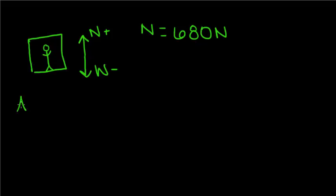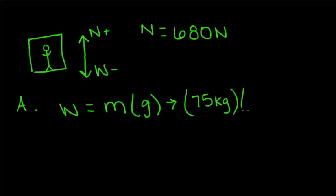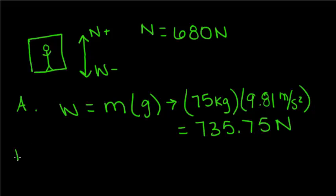For part A, we have to find the man's weight. We find weight by multiplying his mass times the force of gravity. His mass is 75 kilograms. Multiply that by 9.81 meters per second squared, and we get a weight of 735.75 newtons. For part B,